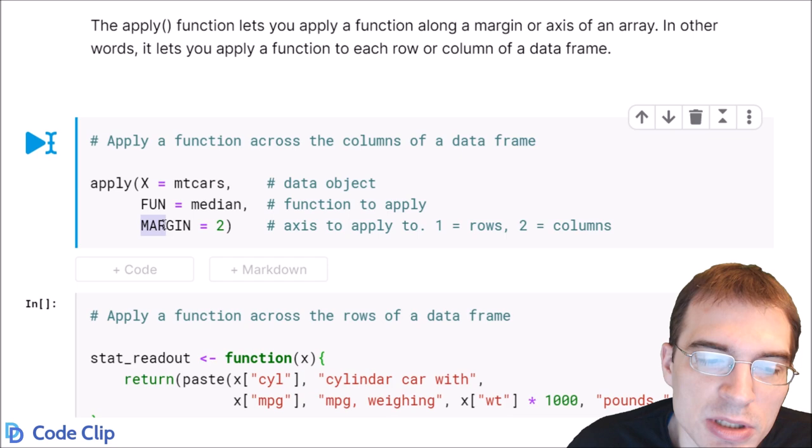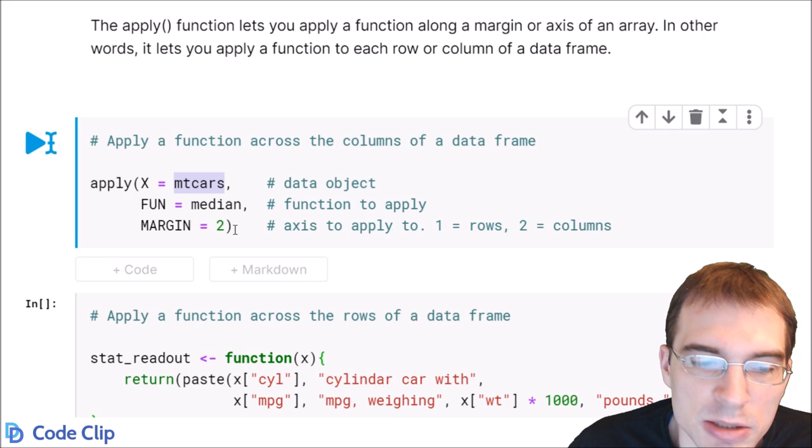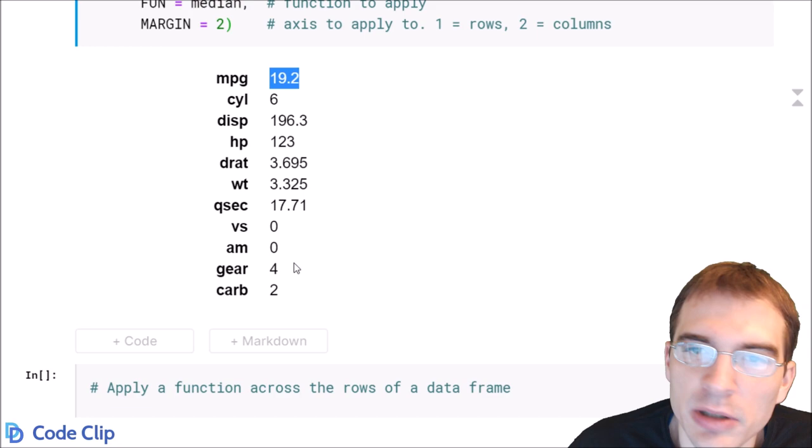So in this case, with the margin set to two and the function set to median, this call to apply is going to get us the median of every single column or every single variable in the mtcars data set. So let's run this and see that that is the result. So you can see we got a single value for each column, which should be the median.